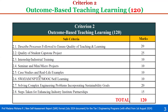Sub-criterion 2.3: Internship or industrial training — weightage 10. Then 2.4: Seminar and mini or micro projects — weightage 10. 2.5: Case studies and real life examples — weightage 10. 2.6: Swayam, NPTEL, MOOCs, self-learning — weightage 10. Then 2.7: Solving complex engineering problems incorporating sustainability goals — weightage 20. And 2.8: Steps taken for enhancing industry-institute partnerships — weightage 15. Total Criterion 2 weightage is 120.